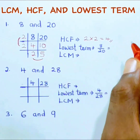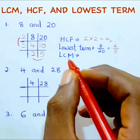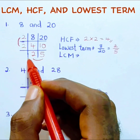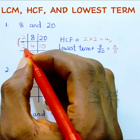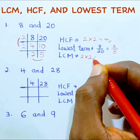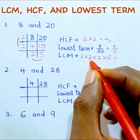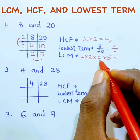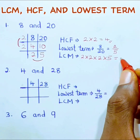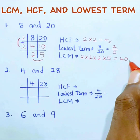For the LCM, we multiply all the numbers on the ladder: 2 times 2 times 2 times 5. 2 times 2 is 4, 4 times 2 is 8, and 8 times 5 is 40. So our LCM is 40.